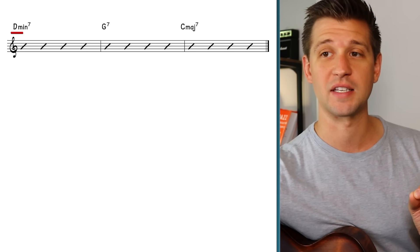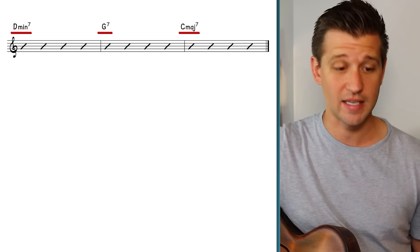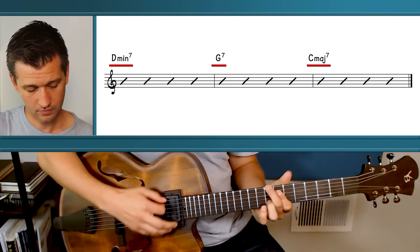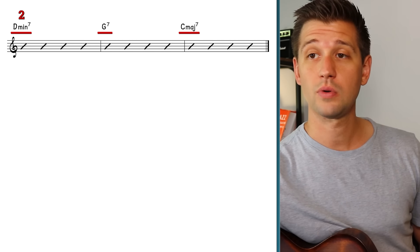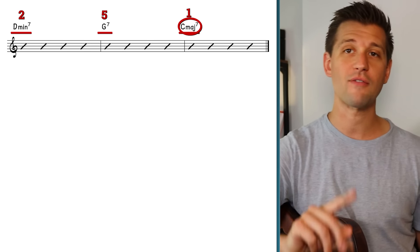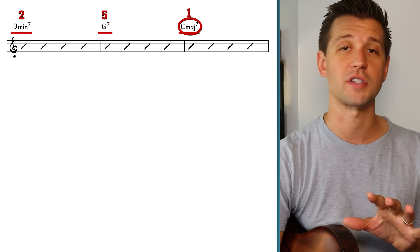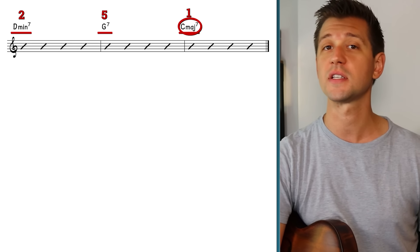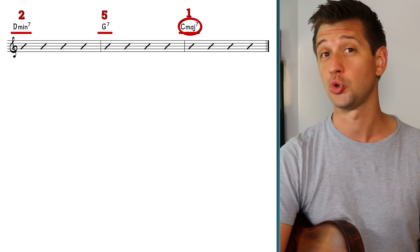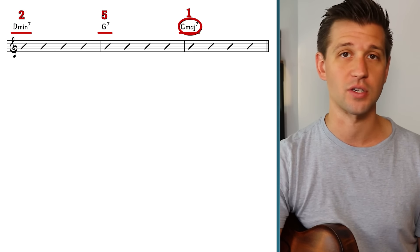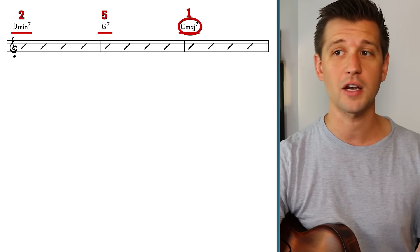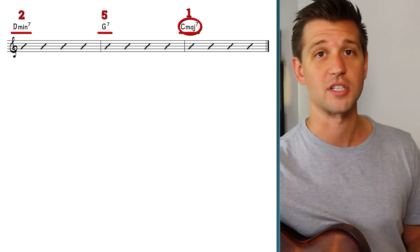Let's look at this chord progression: D minor 7, G7, C major 7. Now this is what we call a 2-5-1 in the key of C major. Even if you don't entirely understand what that means right now, what you do need to know is that this is the most common chord progression that will come up in jazz standards — the vehicles in which jazz musicians use to improvise. So the 2-5-1 is a really important chord progression you need to master.